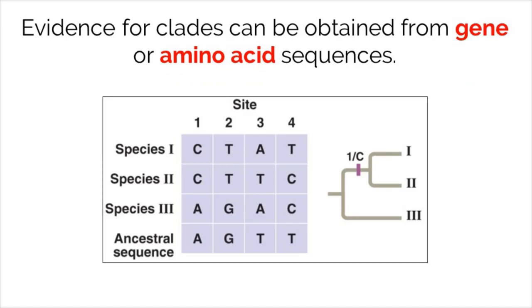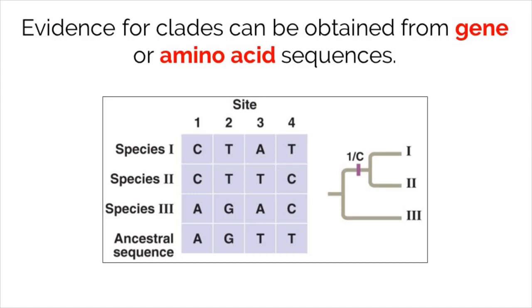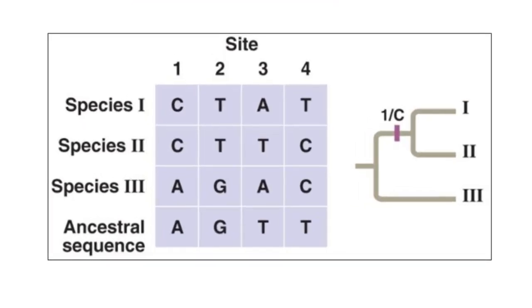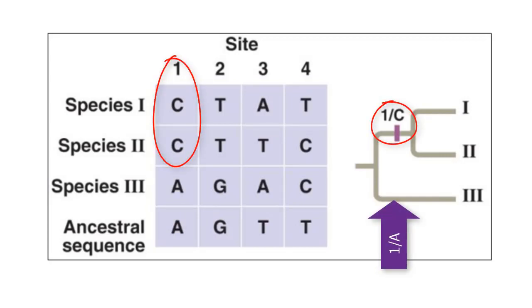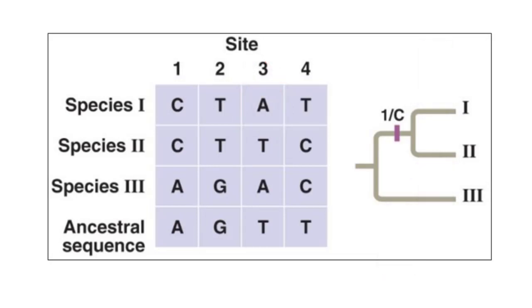The best evidence that we can use to construct cladograms comes from gene and DNA sequencing. If we know the DNA differences between species, we can begin to piece together a cladogram, assuming that a higher rate of differences equates to those organisms sharing a more distant common ancestor. Looking at this example, we can compare three DNA sequences from three different species. The first break in the cladogram is seen at site 1, where species 1 and 2 have cytosine instead of adenine. Then, we can further differentiate species 1 and 2 by site 3, because species 1 has adenine and species 2 has thymine. This procedure works by comparing these DNA differences to an ancestral line.